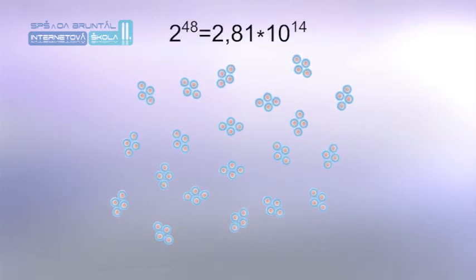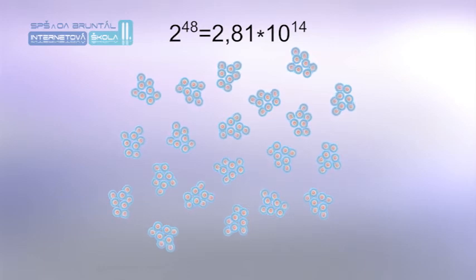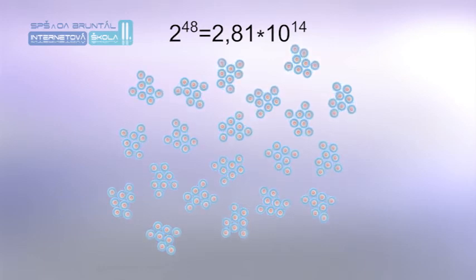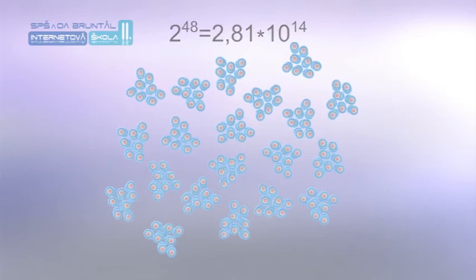Matematicky se to dá vyjádřit vztahem: 2 na 48 rovná se 2,81 x 10 na 14 bakteriálních buňek.